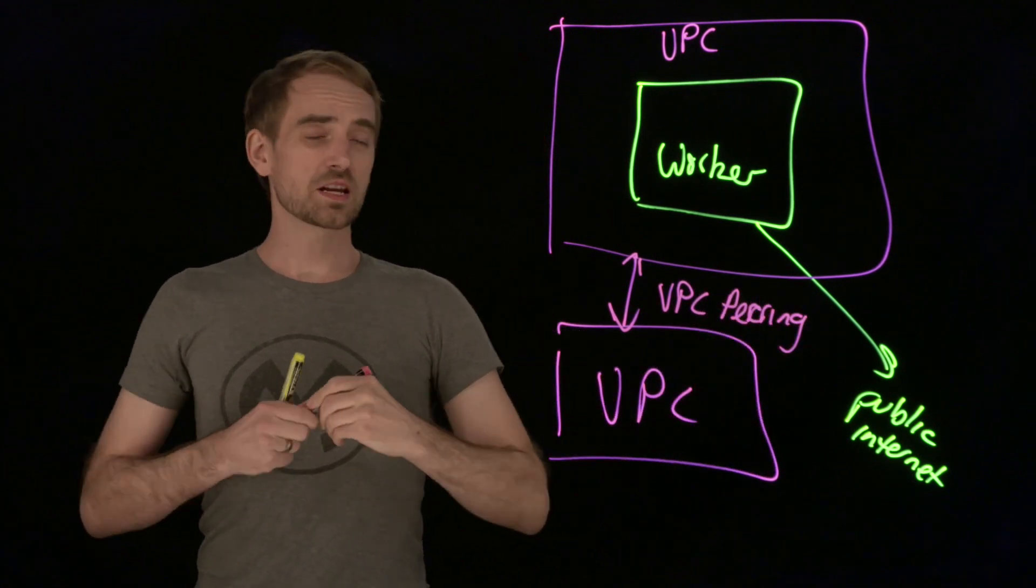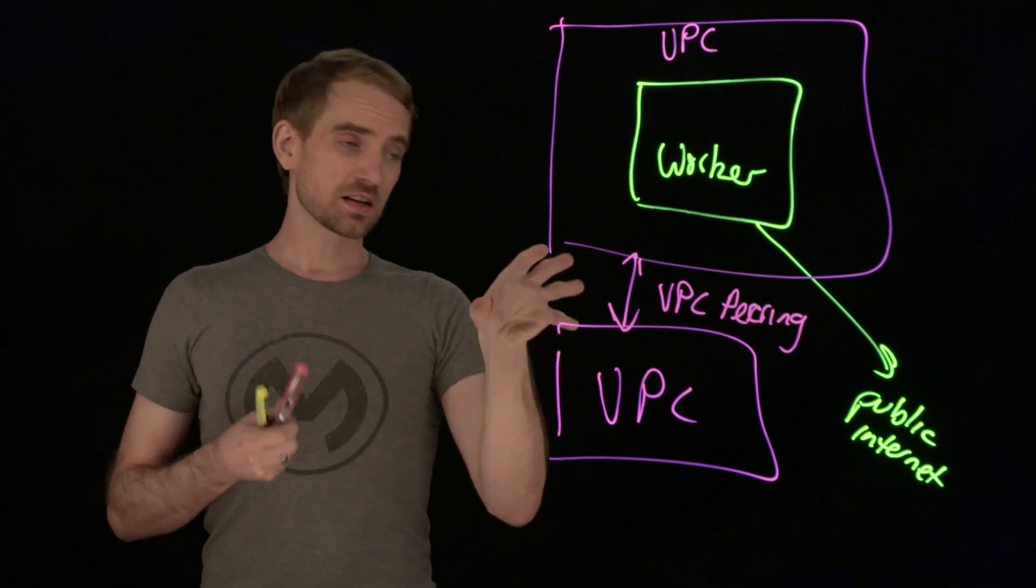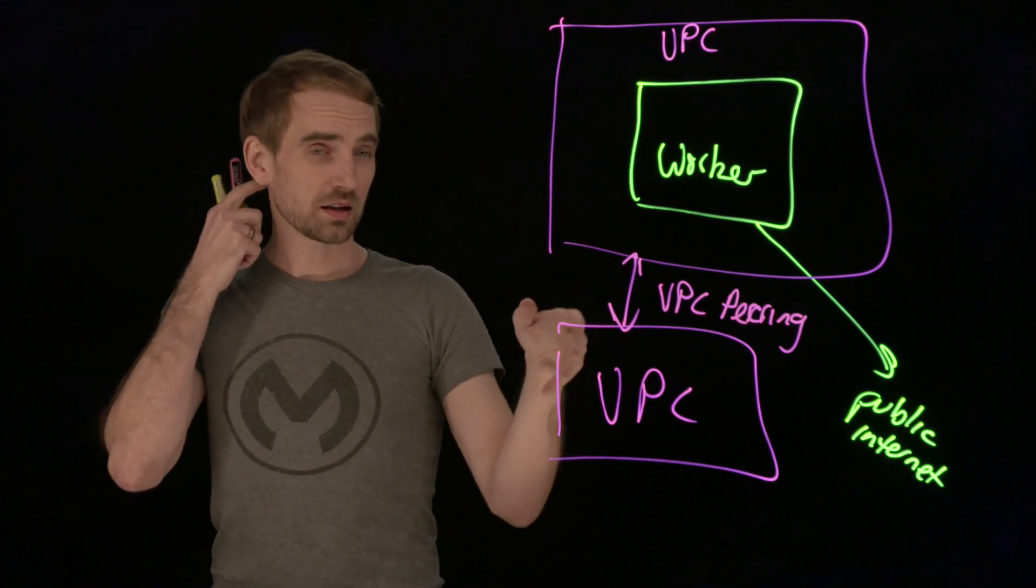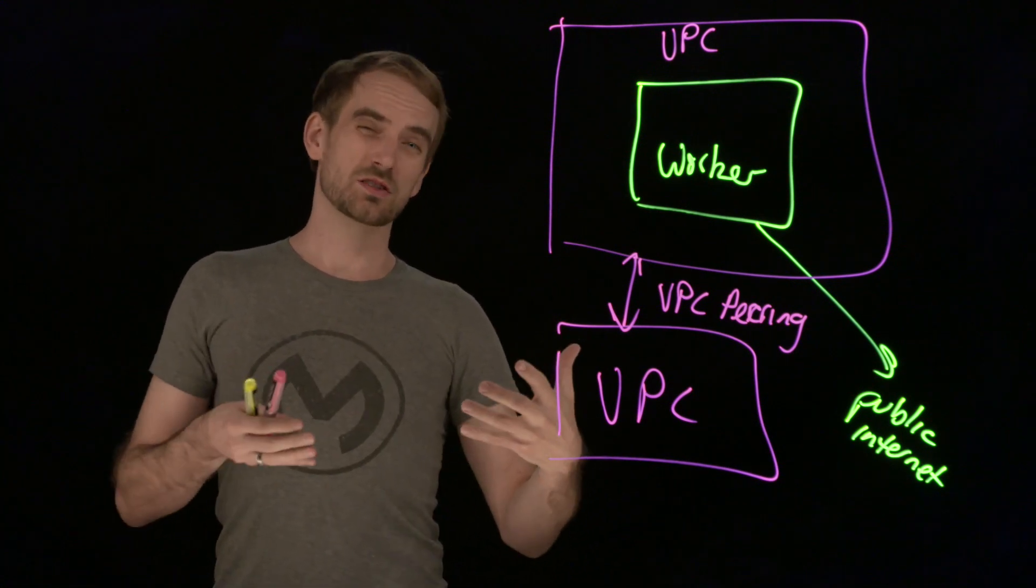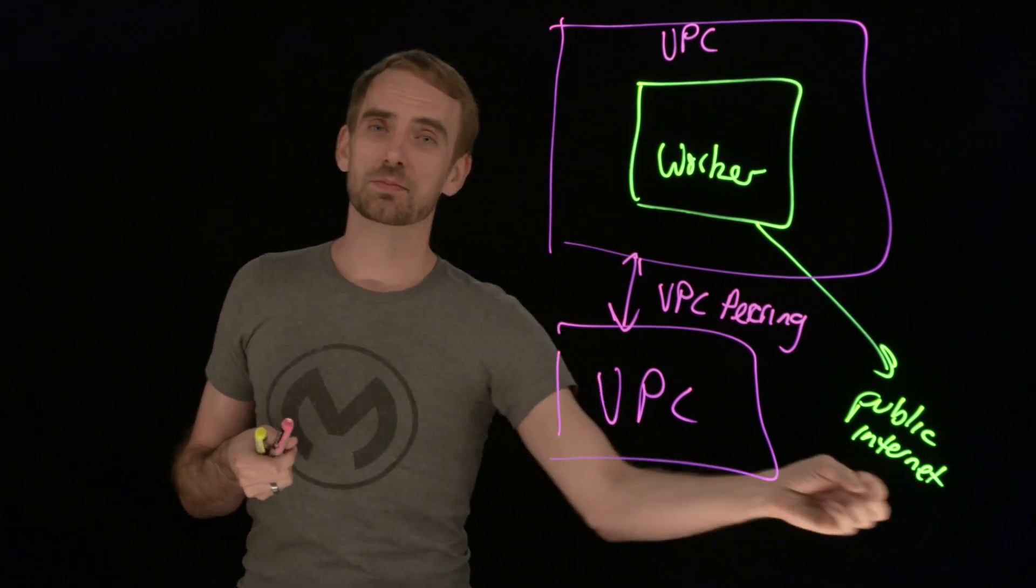VPC peering means that one VPC can communicate with another. It has some connectivity done through the Amazon ecosystem so that your traffic doesn't have to go out to the public internet.